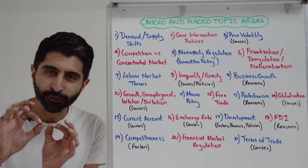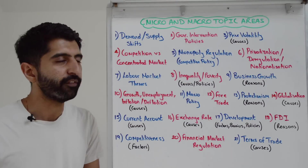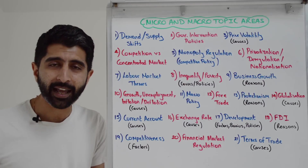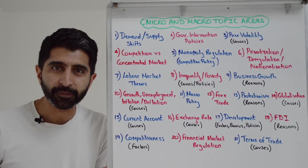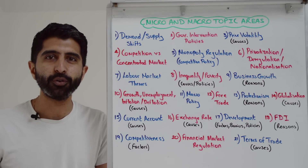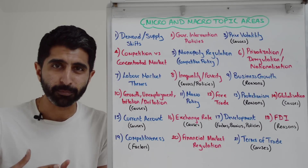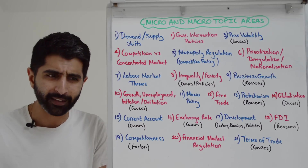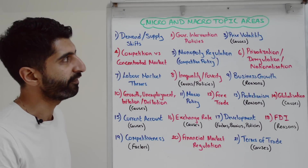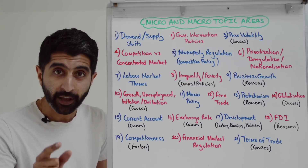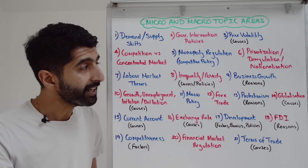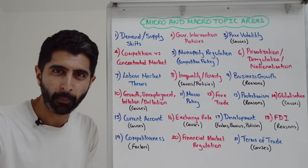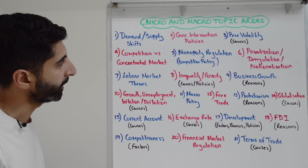Then government intervention: policies to solve market failure in particular. We're talking about policies like indirect taxes, subsidies, regulation, tradable pollution permits, state provision, and price controls. Yes, they even have macro effects — at a push you can get to macro effects there. The micro and macro effects of price volatility — yes, but also the causes of price volatility could be micro or macro in nature.